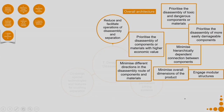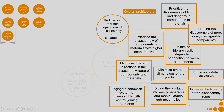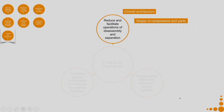Engage a sandwich system of disassembly with central joining elements — for example, opening one particular screw helps to open up the whole component layer by layer. At the shape of components and parts level: avoid difficult-to-handle components, avoid asymmetrical components unless required, design leaning surfaces and grabbing features in compliance with standards, and arrange leaning surfaces around the product's centre of gravity.